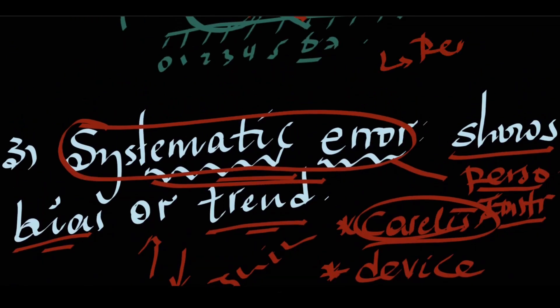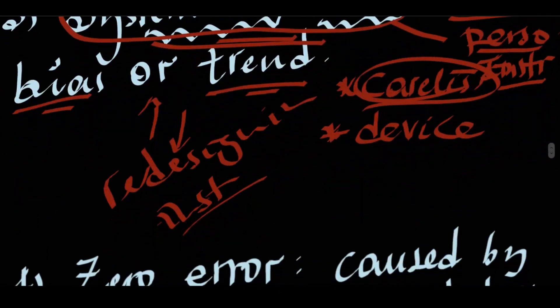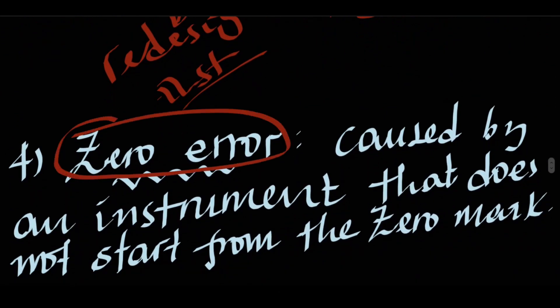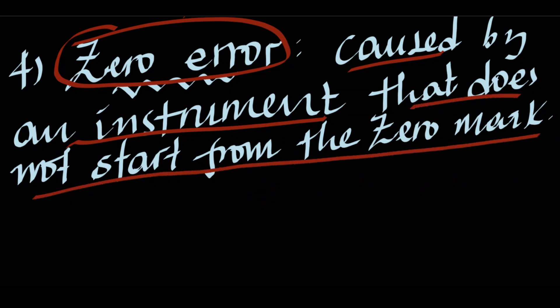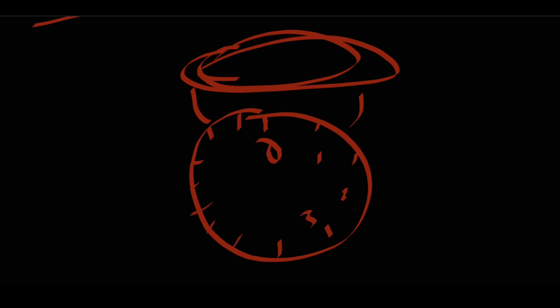Types of systematic error include: personal error, which means wrong eye position; parallax error, which is also a personal error; and zero error. Zero error is caused by an instrument that does not start from the zero mark.